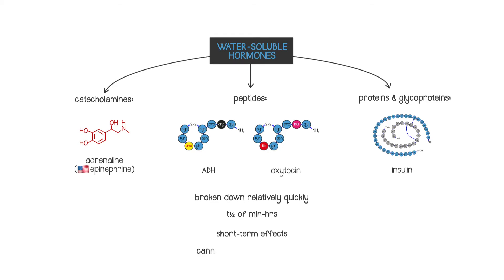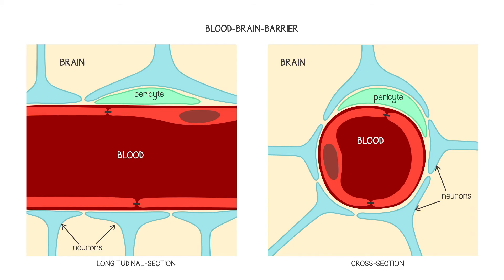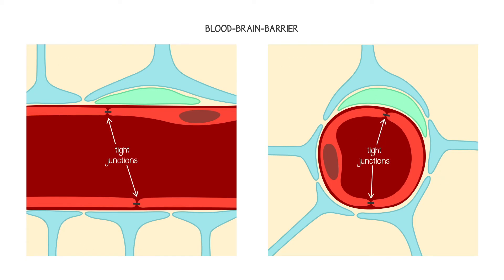Water-soluble hormones can't easily cross cell membranes. And because of this, water-soluble hormones are often excluded from acting on the brain because of the blood-brain barrier. The blood-brain barrier is formed from extra tight connections between the endothelial cells which make up the walls of the blood vessels within the brain.